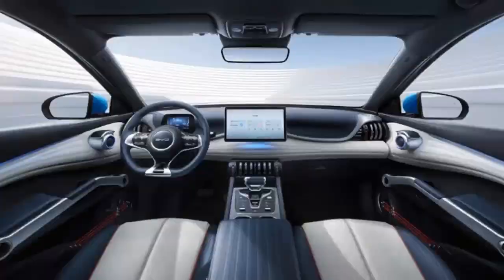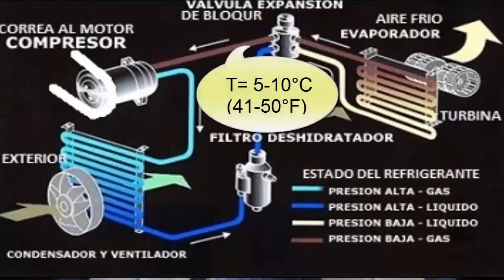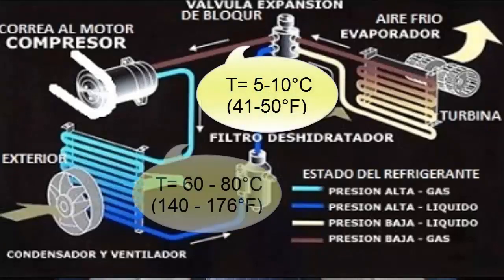In conventional compressors, if the activation clutch works correctly, examine the compressor pipes. In normal operation, the thicker pipe should be cold at approximately 10 degrees Celsius, while the thinner one should be around 70 degrees Celsius. The absence of these temperatures would probably indicate a gas leak.